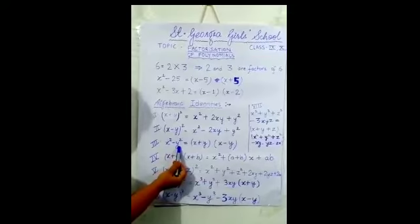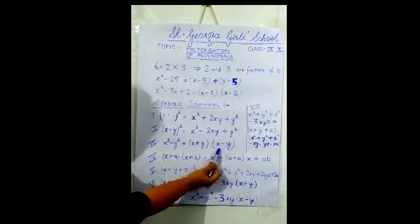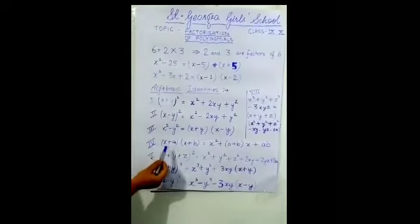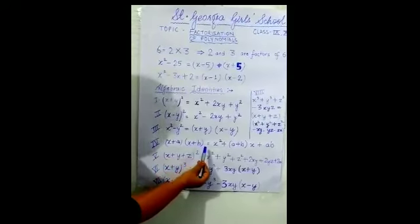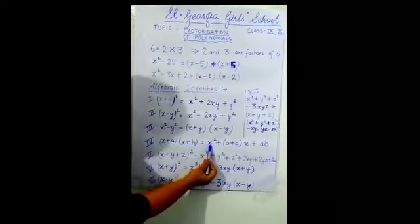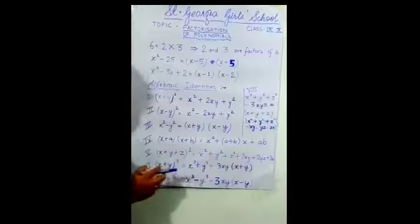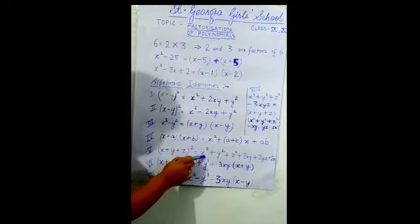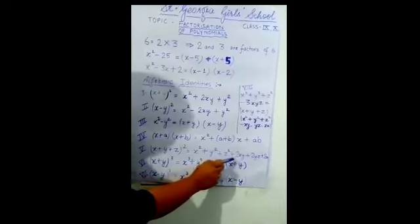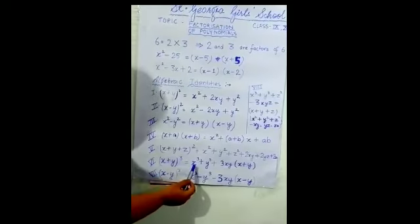The third identity is: x squared minus y squared, which can be factorized as (x plus y) into (x minus y). The fourth identity: (x plus a) into (x plus b) can be expanded as x squared plus (a plus b)x plus ab. The fifth identity: (x plus y plus z) whole square equals x squared plus y squared plus z squared plus 2xy plus 2yz plus 2zx.